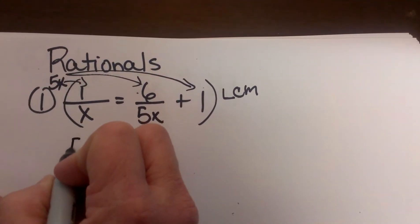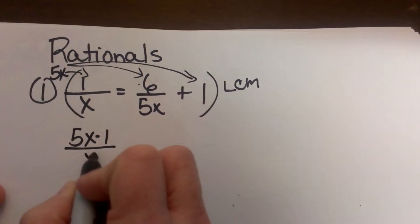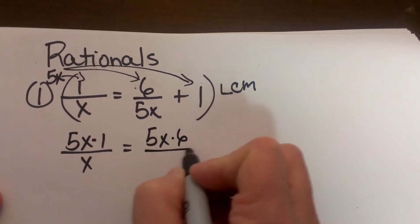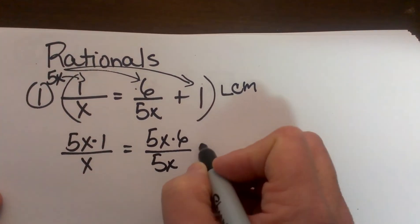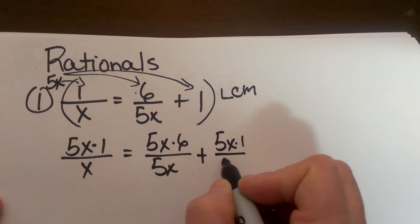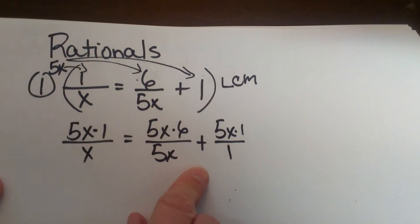So I am going to multiply the first one by 5x so I have 5x times 1 which is just 5x over x is equal to 5x times 6 over 5x plus 5x times 1 over 1 because there is no fraction there so you can just stick a 1 under that.